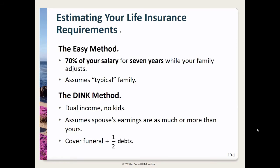In your Learn Smart, the first method you read about was the easy method. This is based on the insurance agent's rule of thumb that a typical family needs around 70% of your salary for seven years before they can adjust to the financial consequences of your death.